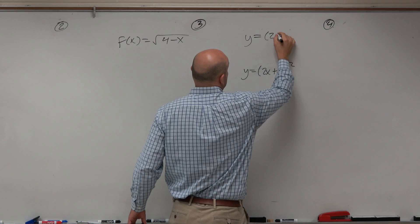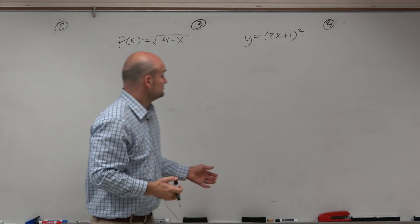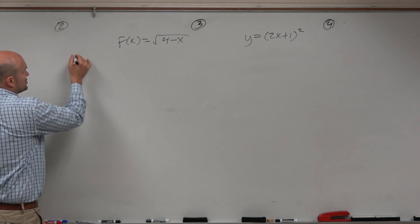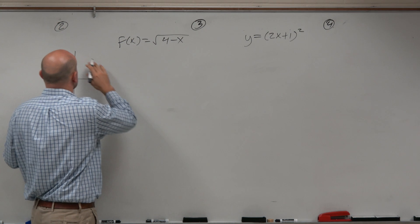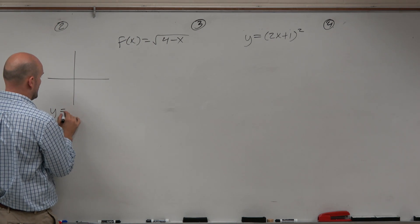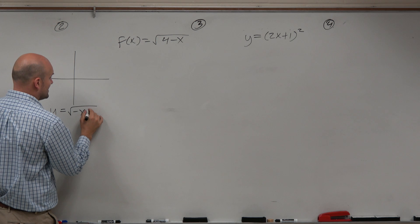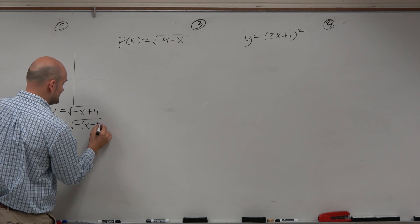We actually already discussed transformations of functions and graphing these. So let's go ahead and just sketch this graph real quick. Maybe you forgot the transformations. So hopefully you guys recognize this would be y = √(-x + 4), and then you factor out the negative.